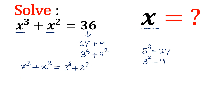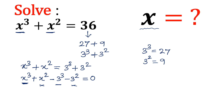Now let us take the square and cube terms towards the left. The equation can be written as x³ - 3³ + x² - 3² = 0.